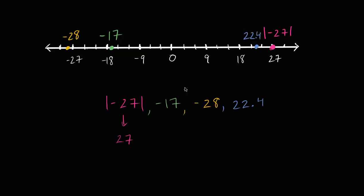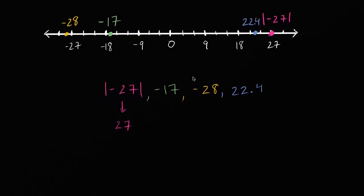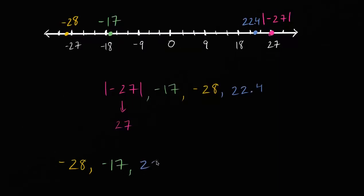So if we want to sort it from least to greatest, we just have to start at the left end of the number line. The smallest of them, or the least of them, is negative 28. Then we go to negative 17. Then we go to 22.4. And then we go to the absolute value of negative 27. And we are done.